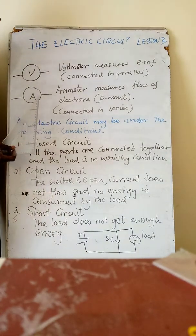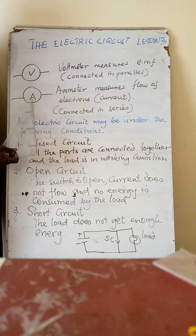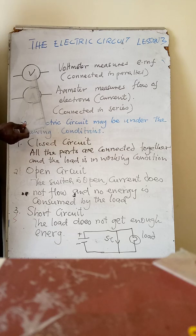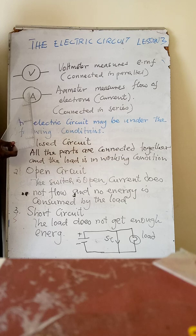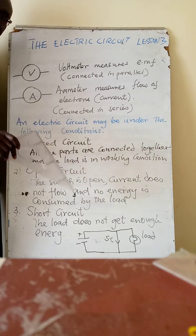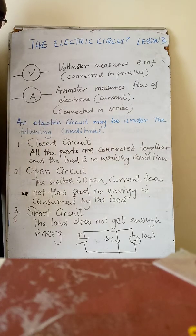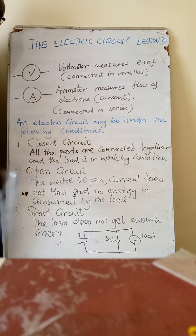There is another device known as an ammeter, whose symbol is a circle with a capital A inside — just as the voltmeter is a circle with a V inside. The ammeter measures the flow of electrons, which we call current. We shall deal with current in lesson four.